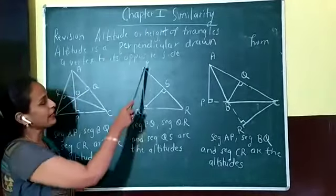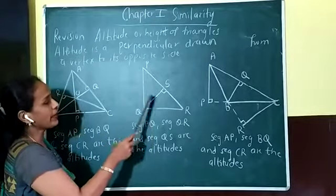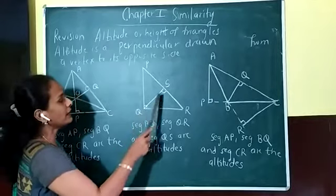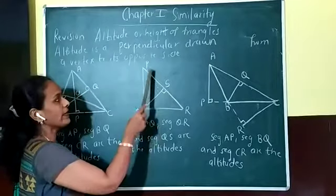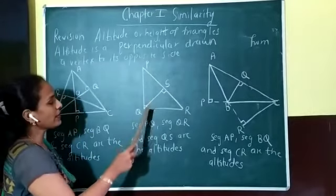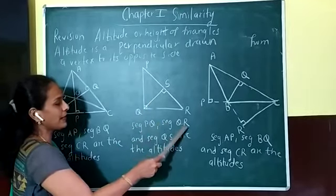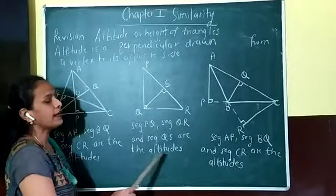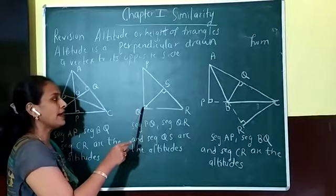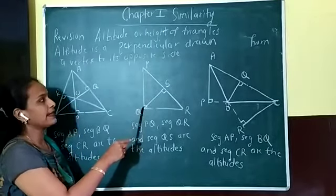In a right angle triangle, the sides forming the right angle are the two altitudes. This is the third altitude drawn on the hypotenuse. In case of the right angle triangle, segment PQ, segment QR, and segment QS are the altitudes, and the orthocentre lies on the right angle vertex.